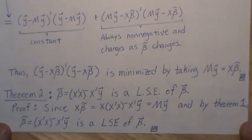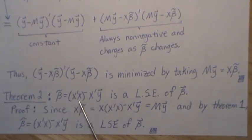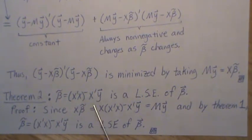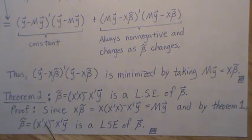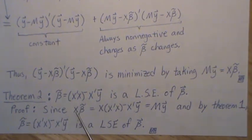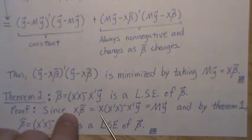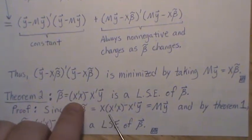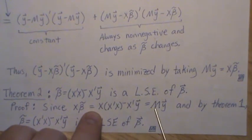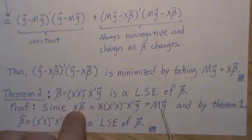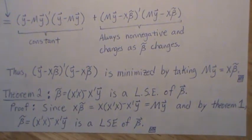But that leads us to theorem two. Beta tilde defined like this, x transpose x generalized inverse, x transpose y, is a least squares estimate for beta. And it's sort of an easy proof since if we pre-multiply x times beta tilde, we get this. And then if we define beta tilde like this, we get this. But this piece here is how we defined m, so it's m y. And so that is equal, and by theorem one, beta tilde has to be a least squares estimate for beta.